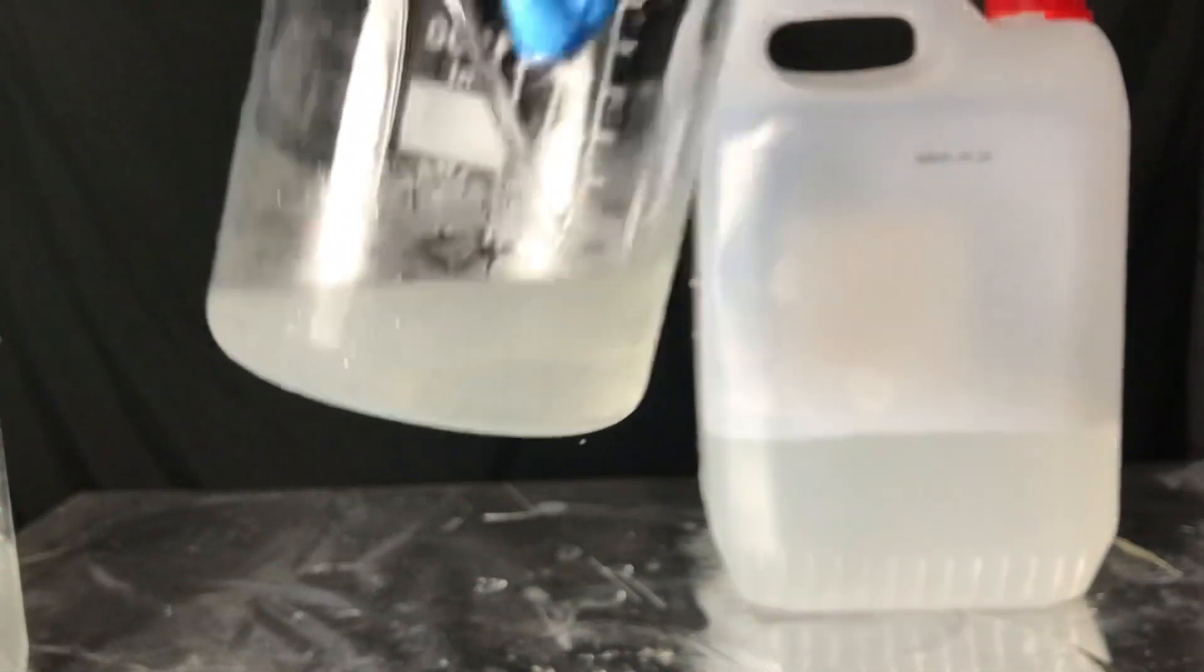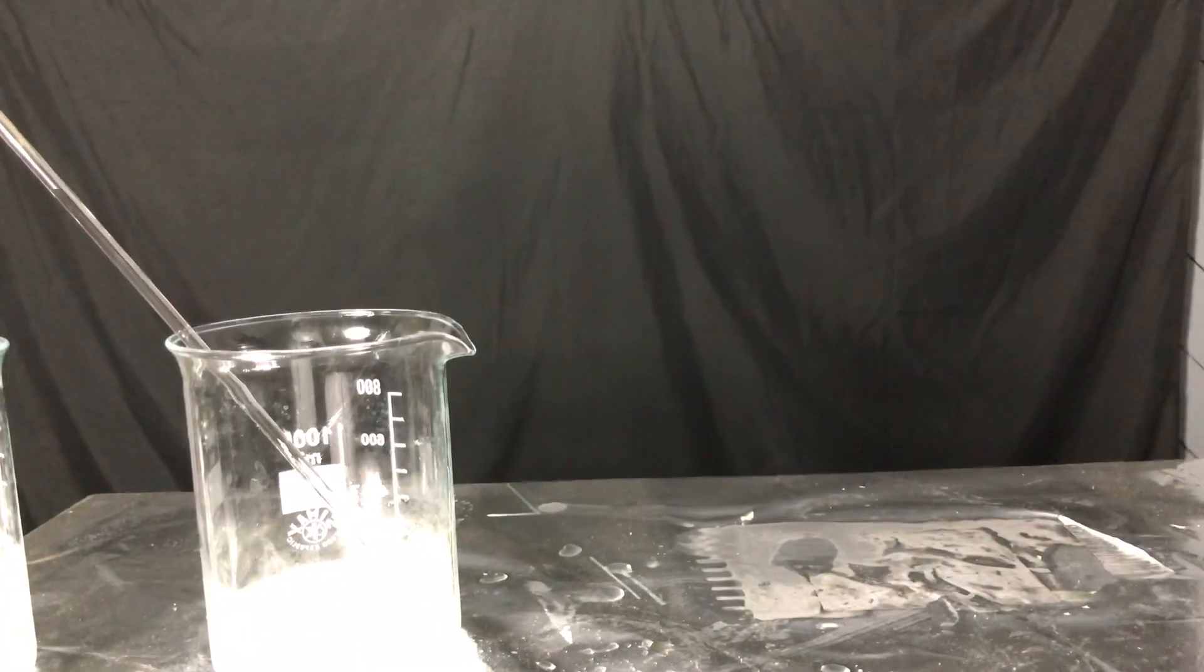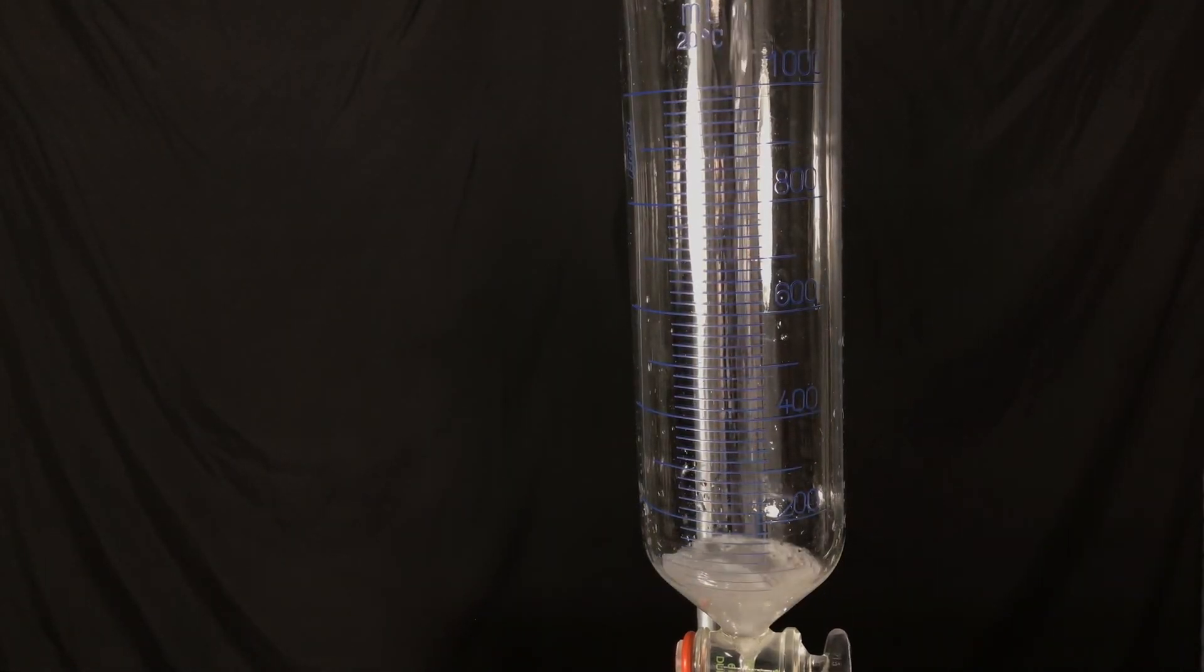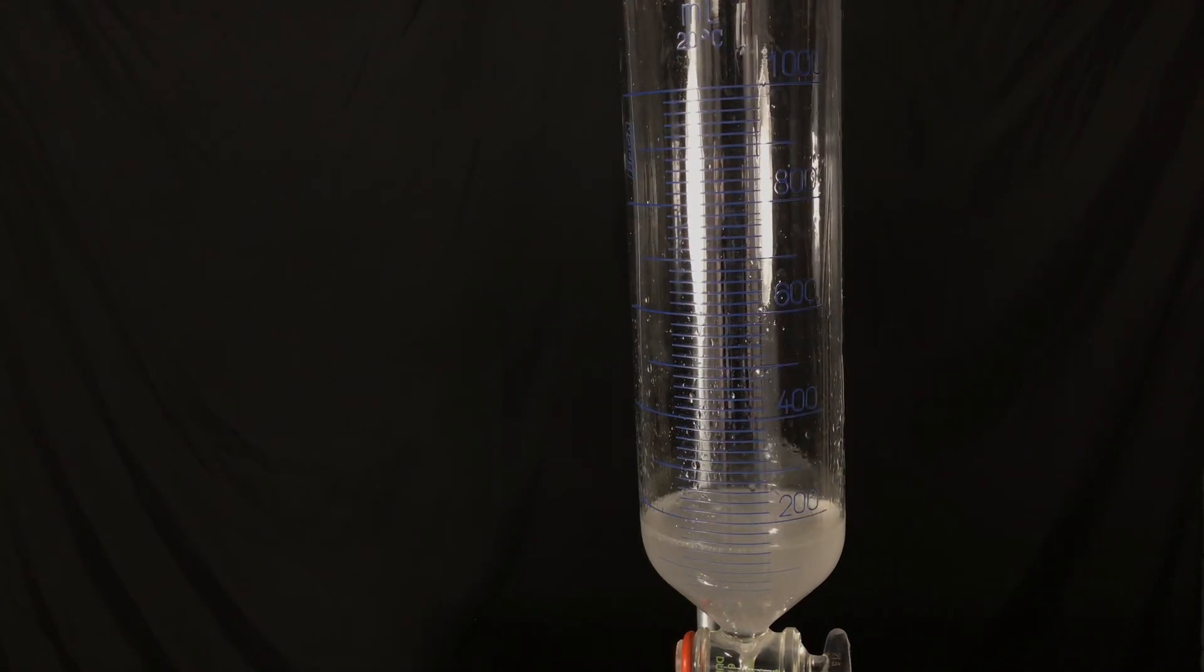After combining both of the beakers, the blobs became even bigger. To get rid of the top layer of water, everything was poured into a separation funnel and the bottom chloroform layer was drained off.